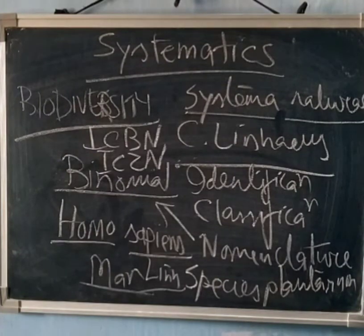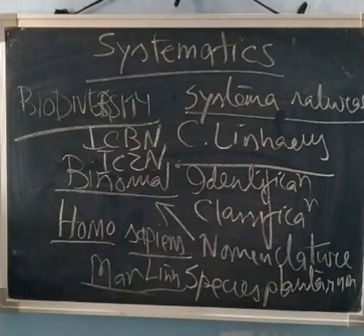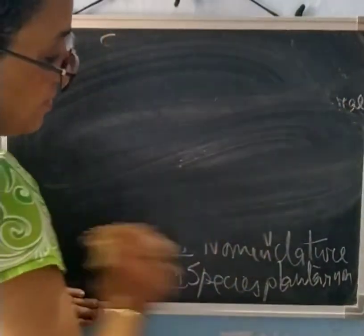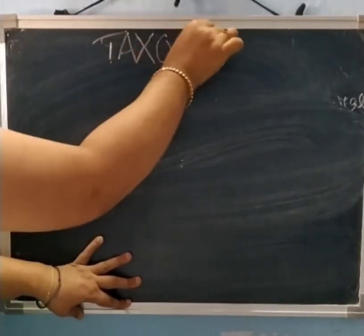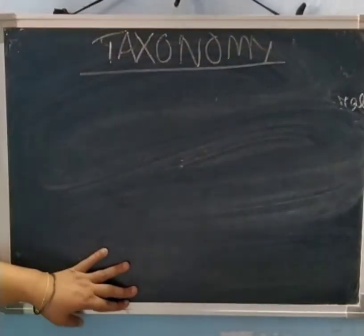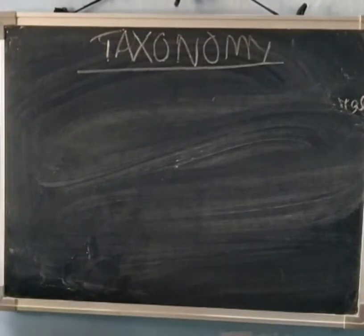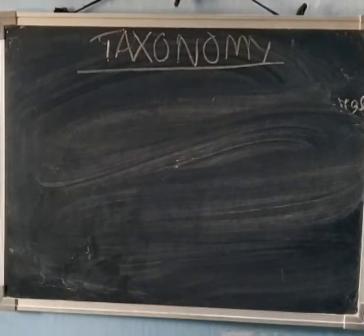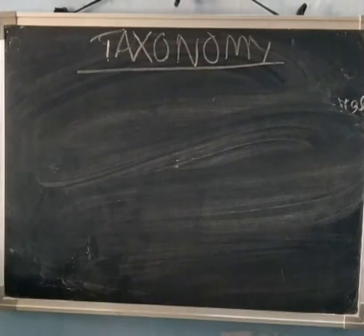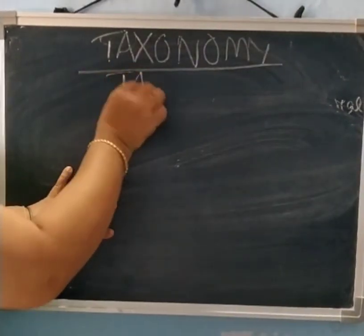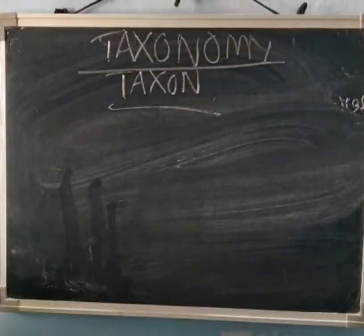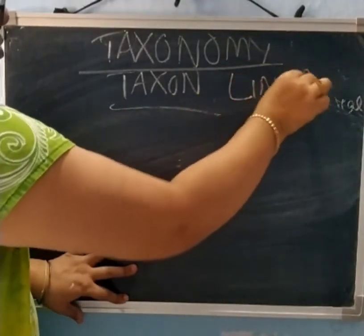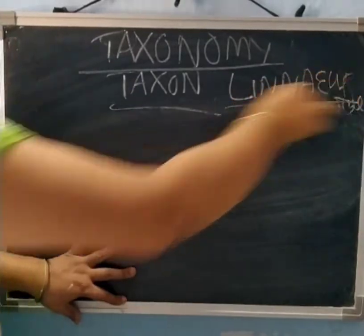So advantages of binomial nomenclature are many. And now the next thing is that what is taxonomy? What is taxonomy? It is the science of identification, classification and nomenclature. Based on the special characteristics, the living organisms can be classified into different categories. So the scientific term for this category is taxa. So what is taxonomy? Who is the father of taxonomy? He is the person who already I said, that is Carolus Linnaeus.